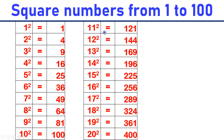11 square is equal to 121. 12 square is equal to 144. 13 square is equal to 169. 14 square is equal to 196.